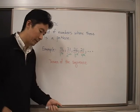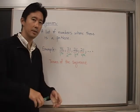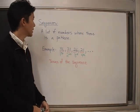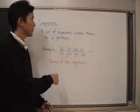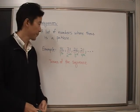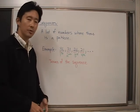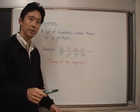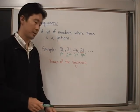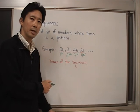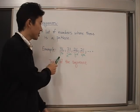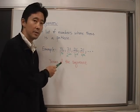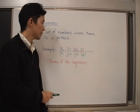So to summarize: what is the sequence? A sequence is a list of numbers where there is a pattern, and it is also going to be important to know that all of the numbers of the sequence are called the terms. The first number of the sequence is called the first term, the second term of the sequence, and so on.